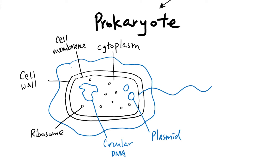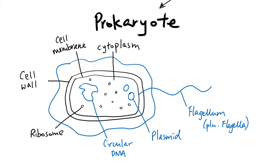Next we have this tail structure called the flagellum. In plural form, we call these flagella. The flagellum helps the cell move — it's similar to the tail found in sperm cells.